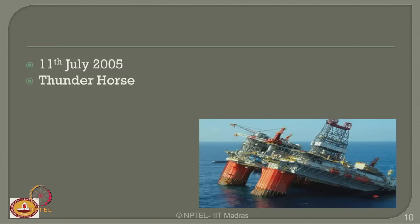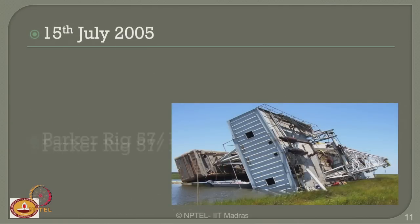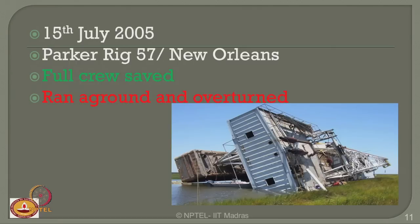There was a capsize on 11th July 2005 — the famous Thunder Horse platform. The full crew working on board was completely saved, but unfortunately Hurricane Dennis collapsed the platform totally, making it not reusable. On 15th July 2005, Parker Rig 57 in New Orleans — the full crew was saved, but the rig ran aground and completely overturned, and its operational feasibility was challenged completely.